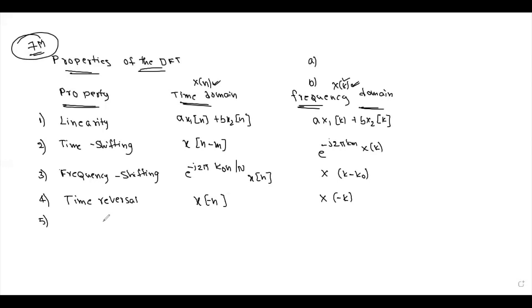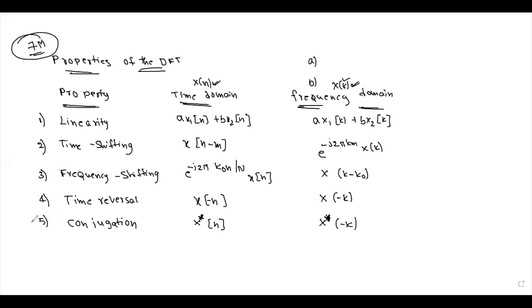The next property is the Conjugation Property. In the time domain: x*(n). In the frequency domain: X*(-k).